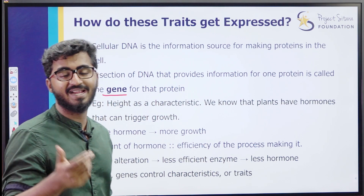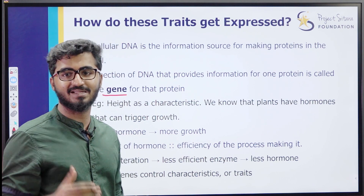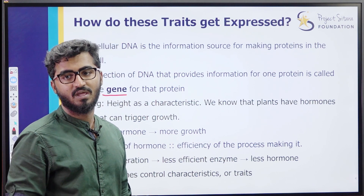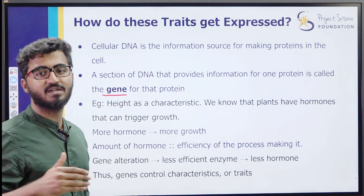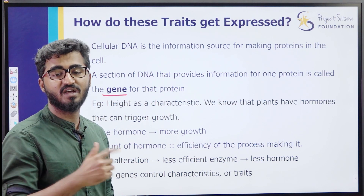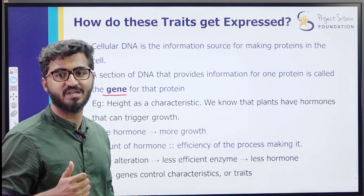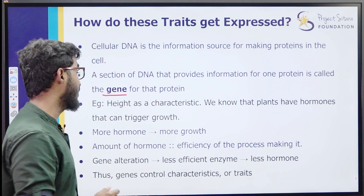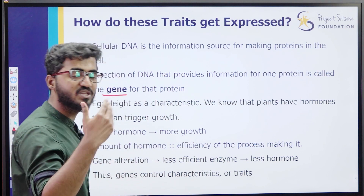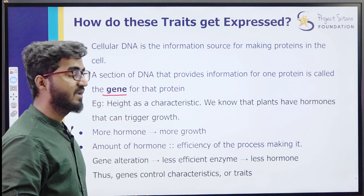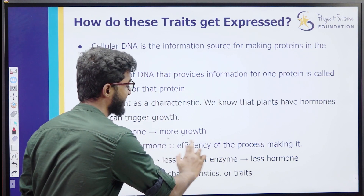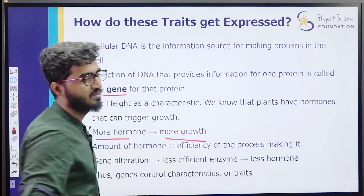Let us consider height as a characteristic. A plant has height, so that is a characteristic. For a plant to grow, it needs a hormone. Remember from the control and coordination chapter - auxins. More auxins means more growth. Correct.